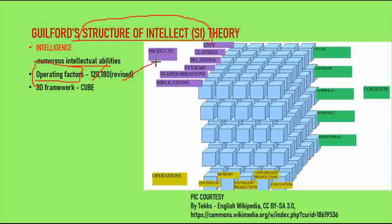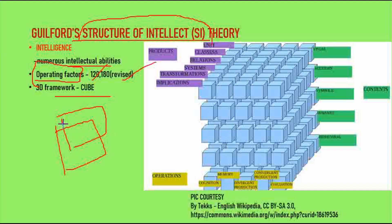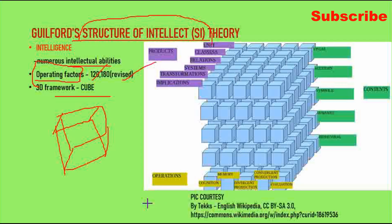How do you organize this theory? It is a 3D framework — like a Rubik's cube. We calculate intelligence by measuring many factors such as G and S. In the Structure of Intellect model, all mental abilities are organized in this 3D framework.